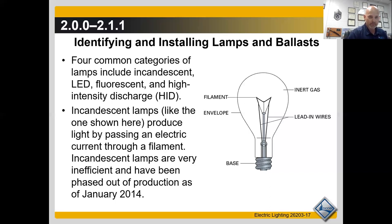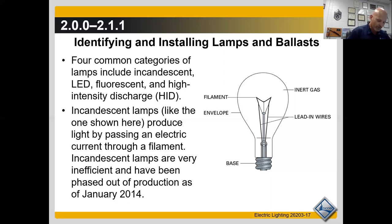Incandescent lights produce light by passing an electric current through a filament. Incandescent lamps are very inefficient and have been phased out of production as of 2014, though you can still purchase them at most stores. They were invented over 100 years ago, their basic construction remains the same, and they're also called filament lamps. They're used for general lighting and provide a warm, natural light.